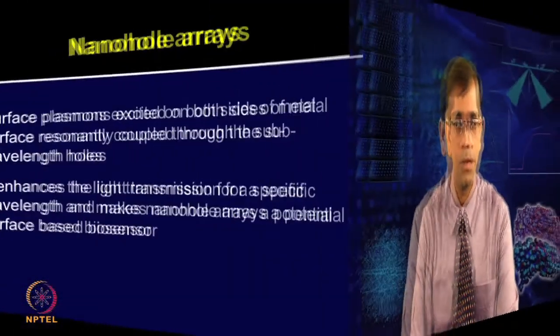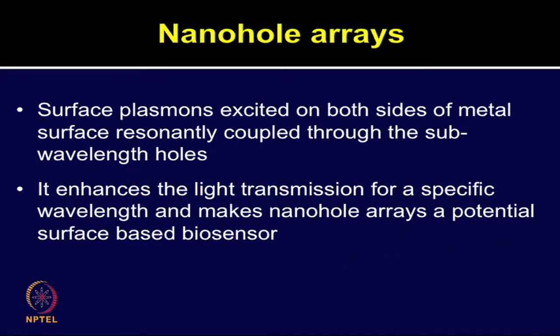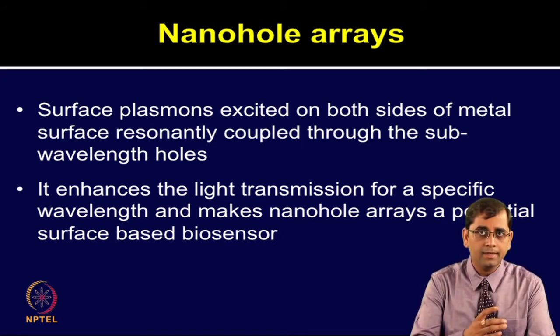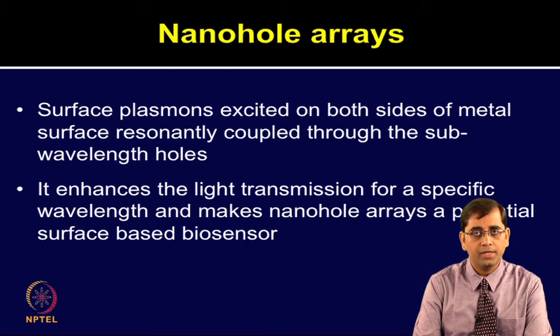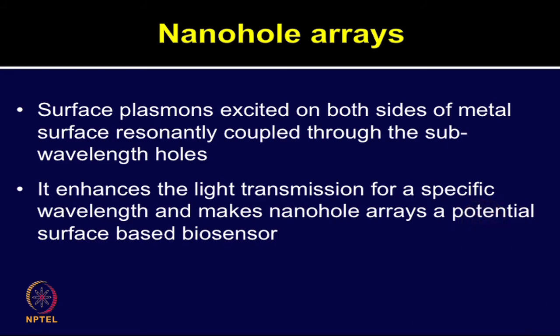Let us now talk about another related technique also based on the SPRI principle: nano-hole arrays. The nano-hole array technique utilizes label-free detection of biological binding events in a high throughput manner with temporal and spatial resolution. In nano-hole arrays, surface plasmons are excited on both sides of the metal surface, resonantly coupled through sub-wavelength holes, which enhances the light transmission for a specific wavelength.